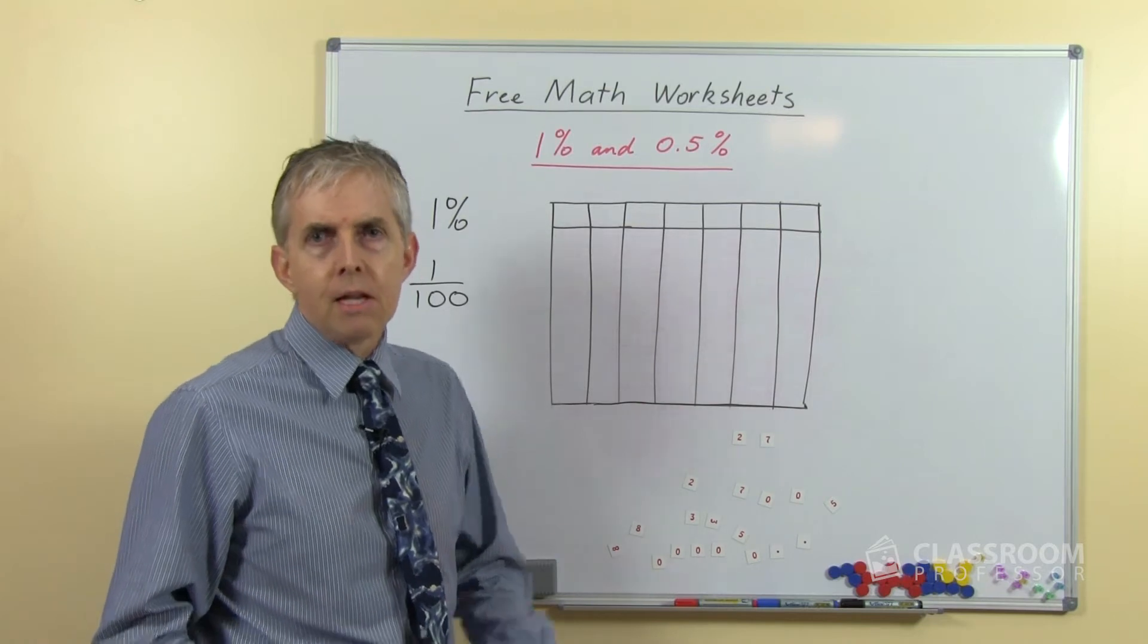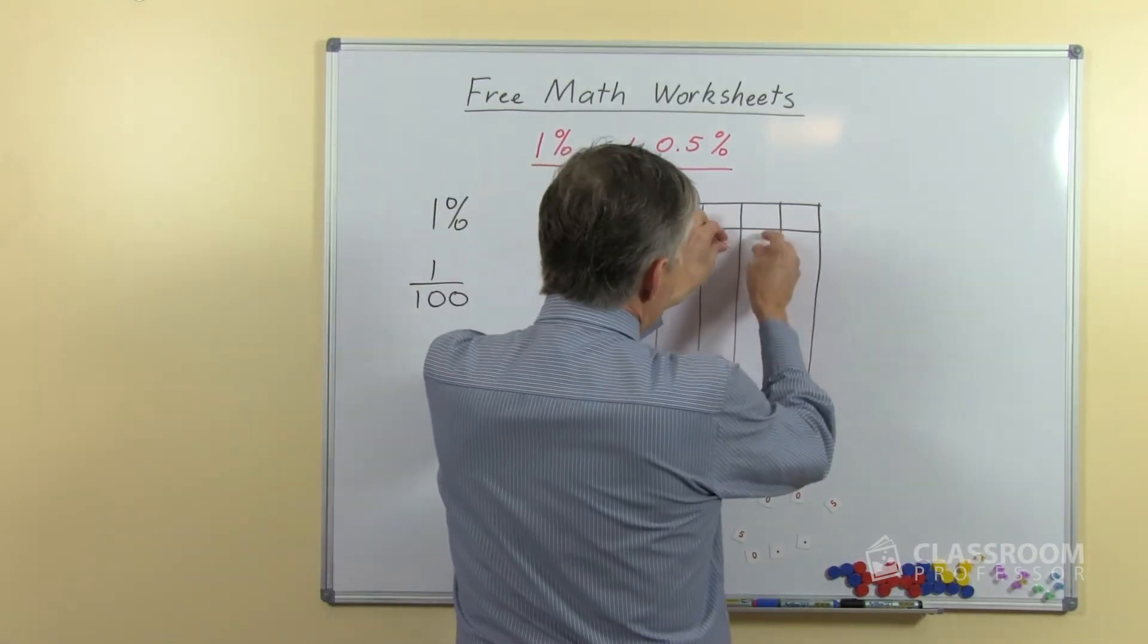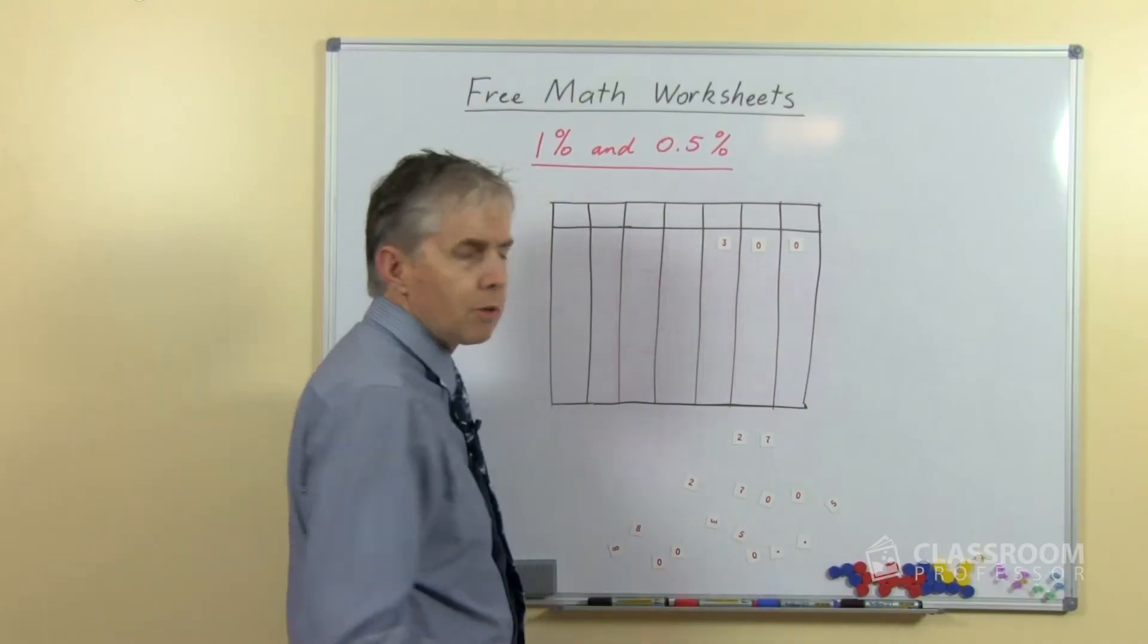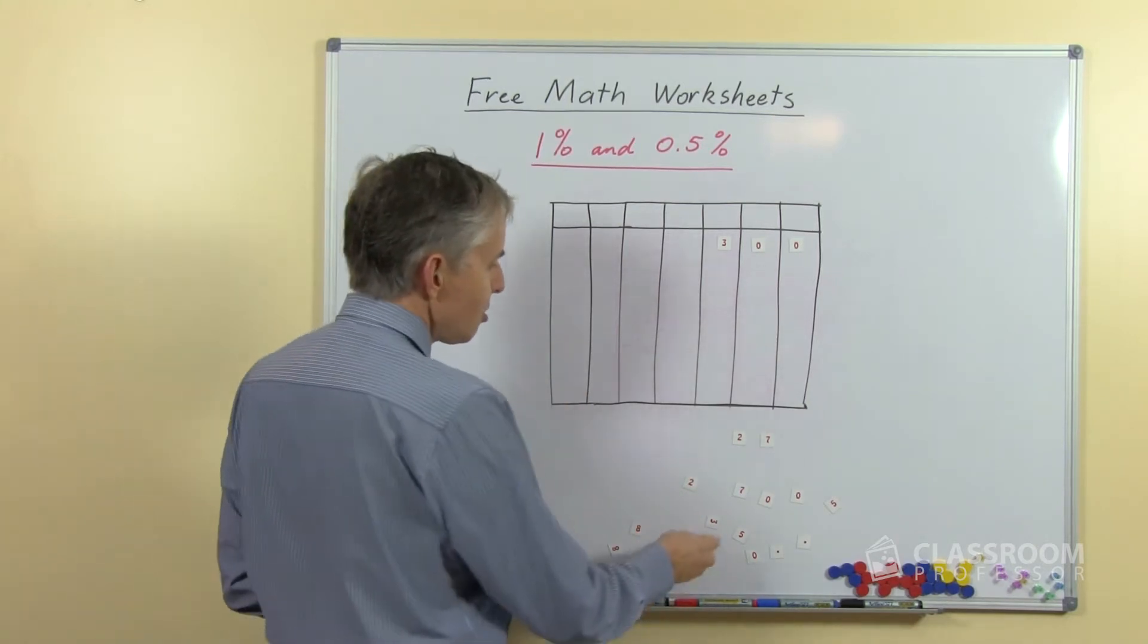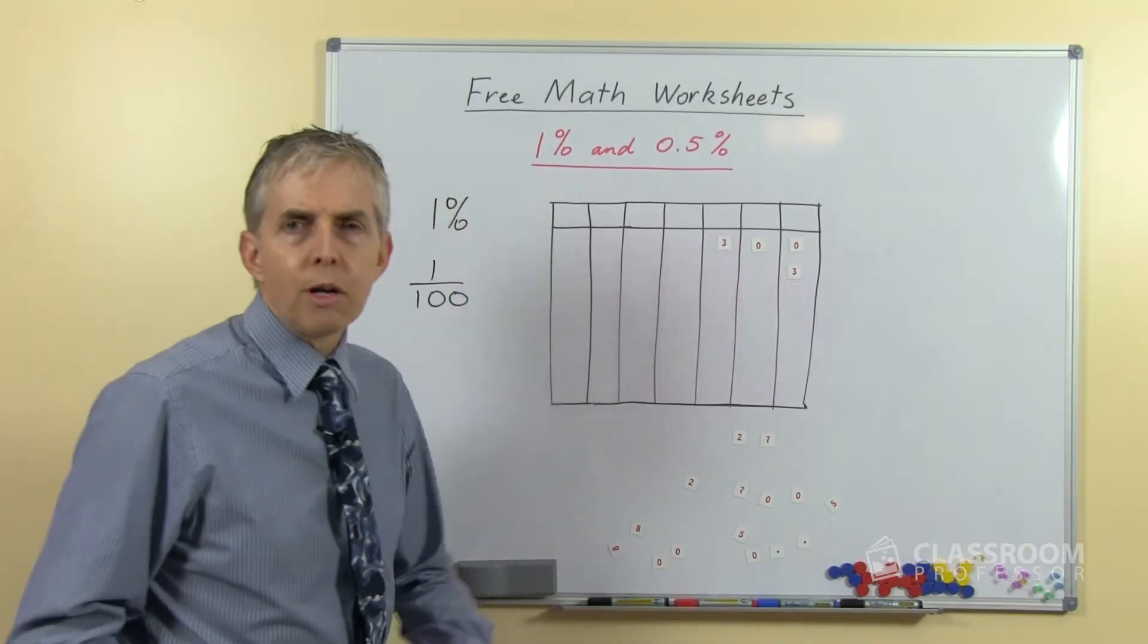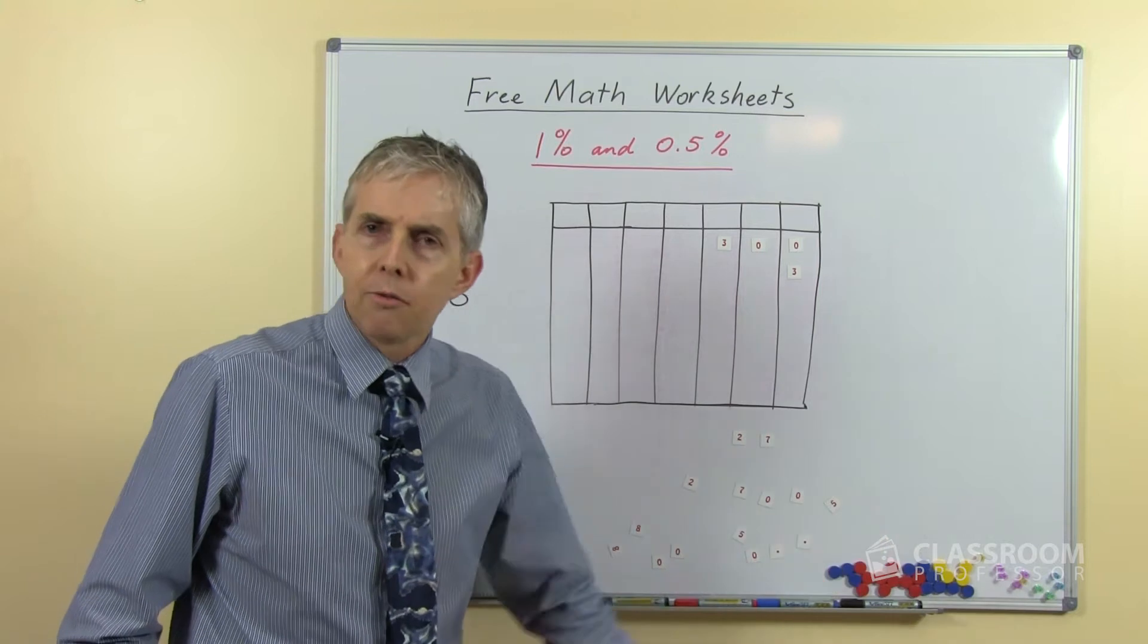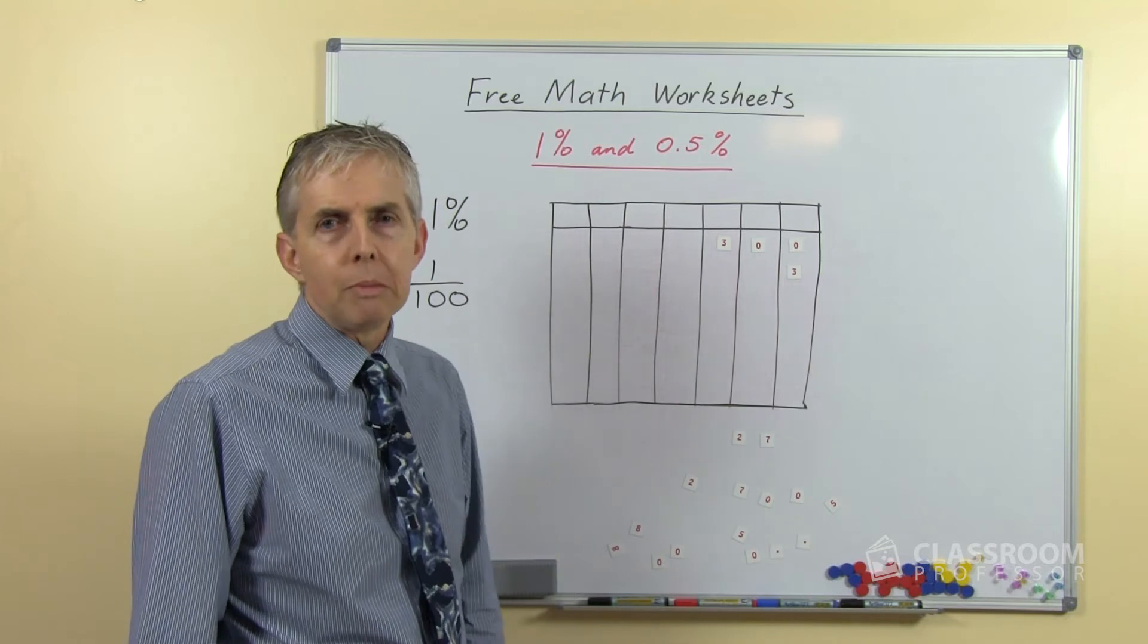We're going to start there and then move forward. So in the worksheets there are a couple of examples like this. We start with a number like three hundred and say what will one hundredth of three hundred be? Well that would be just plain three. And I would want to help students to understand that by asking them questions like if we divide that by a hundred, if we take one hundredth part of that what will it be?